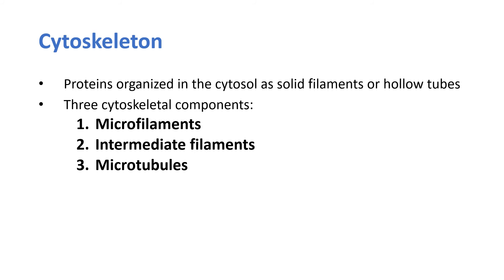Cells maintain their shape and structure using proteins we call the cytoskeleton. 'Cyto' means cell, and just as your bones give structure to your body, the cytoskeleton gives structure to the cell. The cytoskeleton consists of three proteins: microfilaments, intermediate filaments, and microtubules.